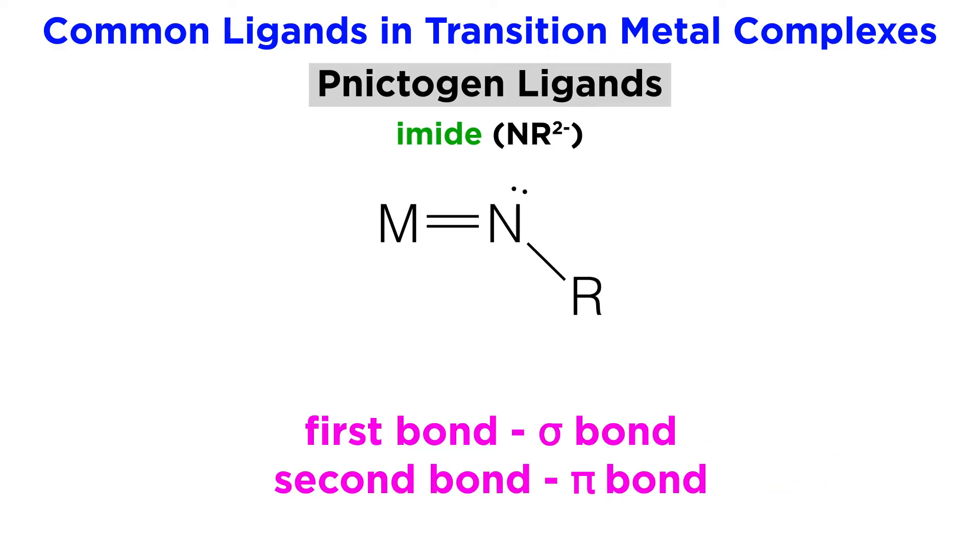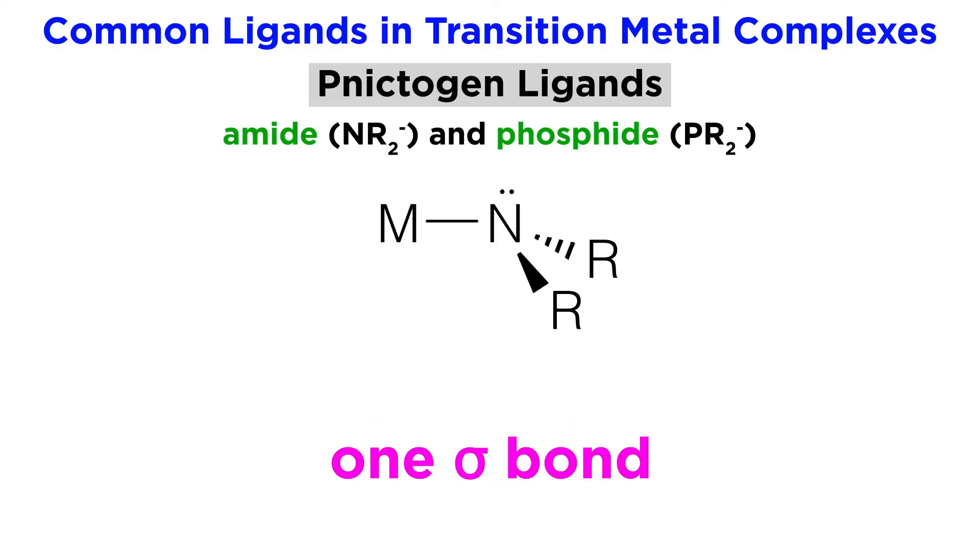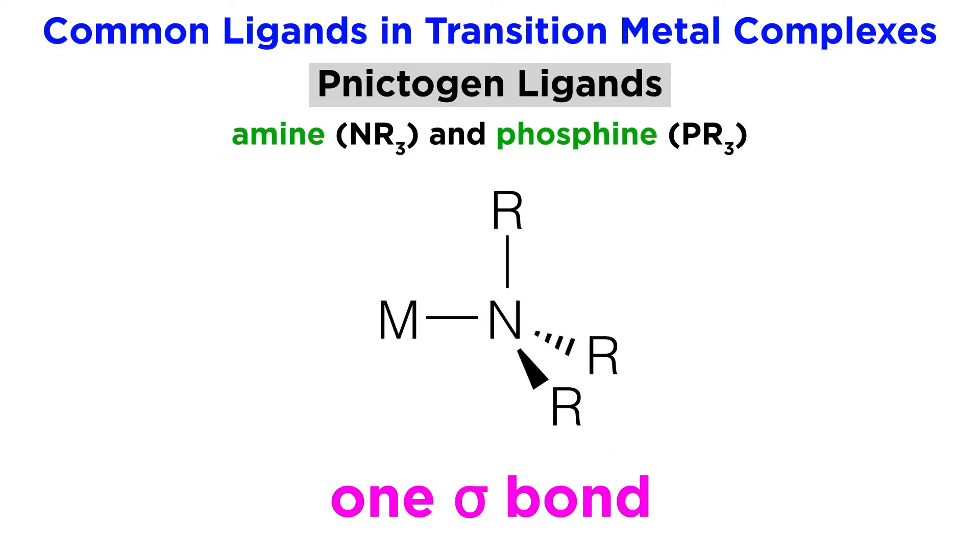Imides, or NR2-, can do something similar, just with one sigma bond and one pi bond. Amide and phosphide ions, or NR2- and PR2-, can make one sigma bond to a metal atom, as can neutral amines and phosphines.